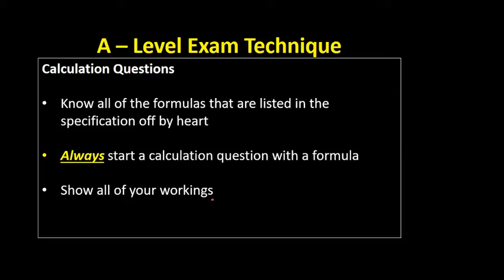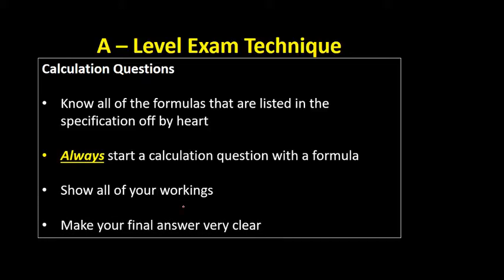Always show all of your workings as well. This will help the examiner if you haven't got the correct answer — the examiner may be able to award you maybe four out of five marks if you've shown all of your workings, because it will be obvious where you went wrong. Even if you get the wrong answer, if you just wrote the answer and nothing else the examiner can't give you anything, but if you've shown your workings they might be able to give you almost four marks.